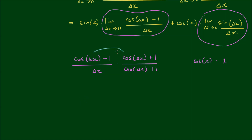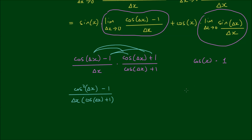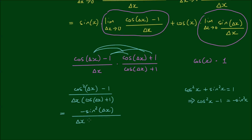Expanding the top gives us the difference of two squares: cos²(Δx) − 1. The bottom becomes Δx·[cos(Δx) + 1]. Using the Pythagorean identity — cos²(θ) + sin²(θ) = 1, so cos²(θ) − 1 = −sin²(θ) — the numerator becomes −sin²(Δx), giving us −sin²(Δx) / [Δx·(cos(Δx) + 1)].